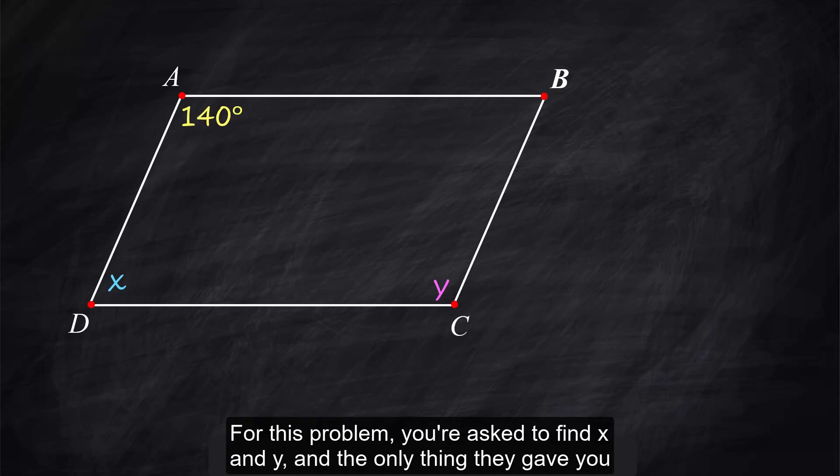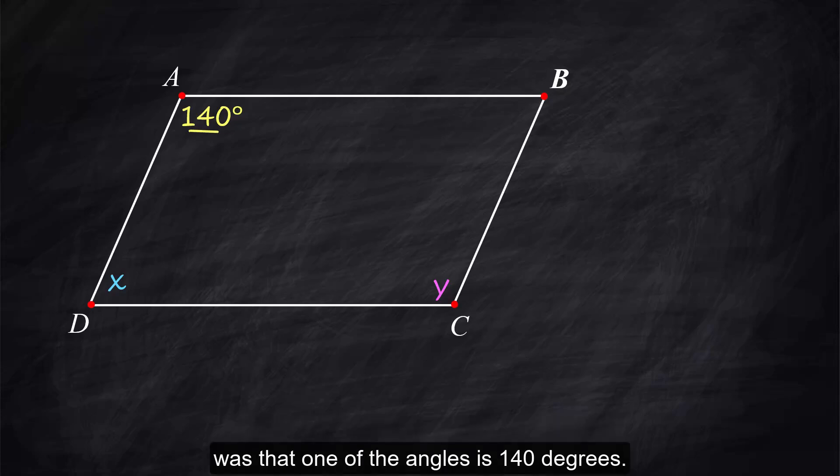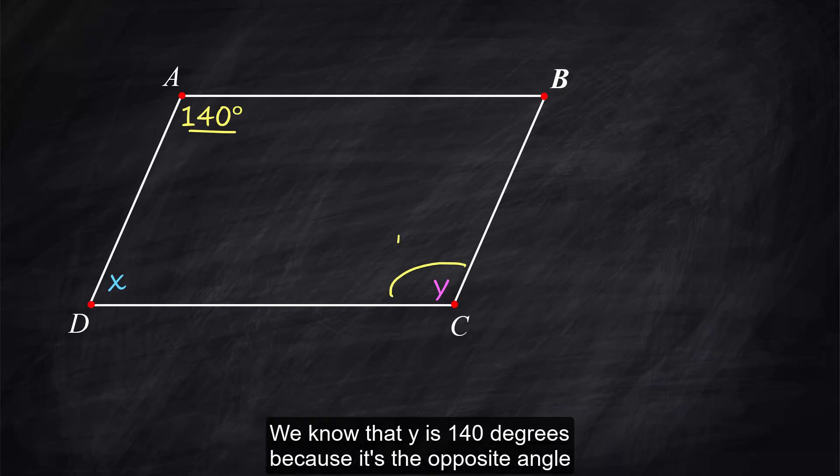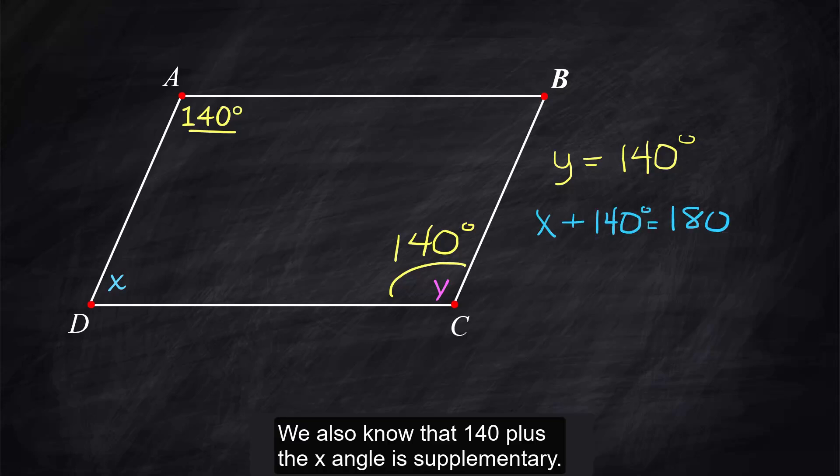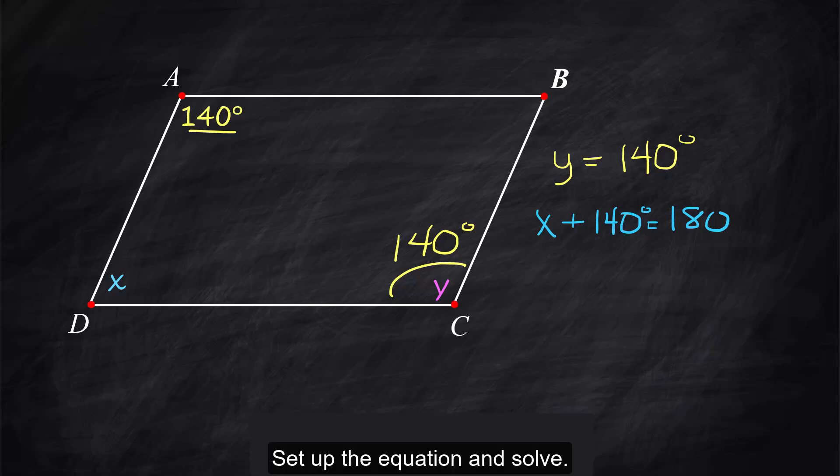For this problem you're asked to find x and y and the only thing they gave you was that one of the angles is 140 degrees. We know that y is 140 degrees because it's the opposite angle to that one up in the corner. We also know that 140 plus the x angle is supplementary that means it adds up to 180. Set up the equation and solve x equals 40 degrees.